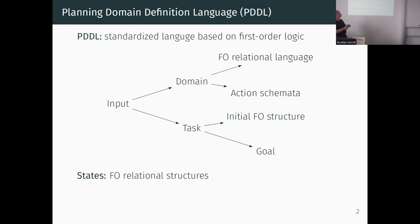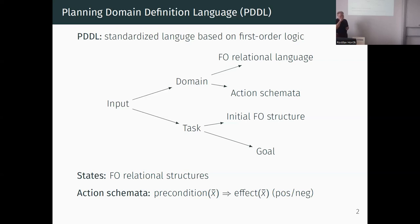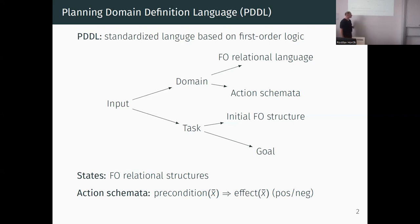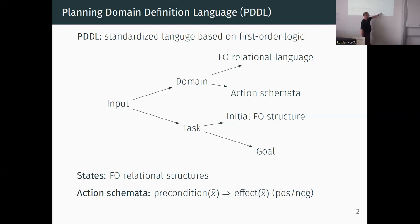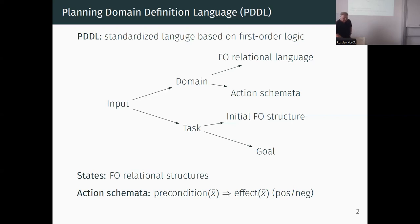At the beginning we are given an initial first-order structure. Transitions are prescribed by action schemata, which are pairs of a precondition and an effect with parameters. To find which actions you can apply in a current state, you ask for which parameter instantiations the precondition holds. For those, you can apply the effect to produce a new state. The effect has two parts: positive, telling which atomic formulas should be valid in the next state, and negative, telling which should stop being valid.